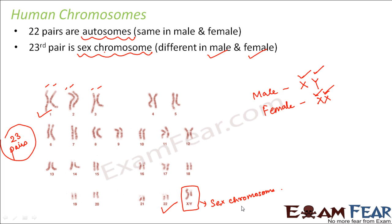So if you talk about a person who is male, each cell of his body will have 46 chromosomes, out of which 22 pairs are the same as females, but the last pair — the sex chromosome — will be XY in all the cells of his body. Similarly, in case of females, the sex chromosome will be XX in all the cells of her body. So that is the difference between male and female, and this sex chromosome determines what the gender of that person will be.